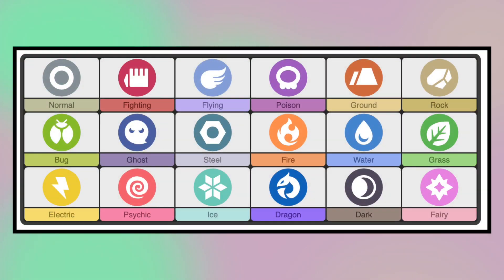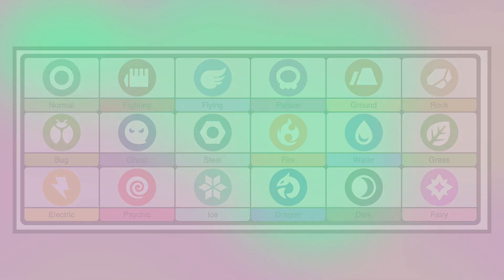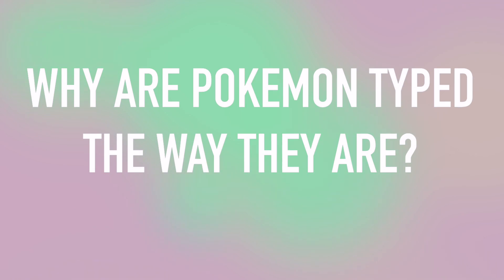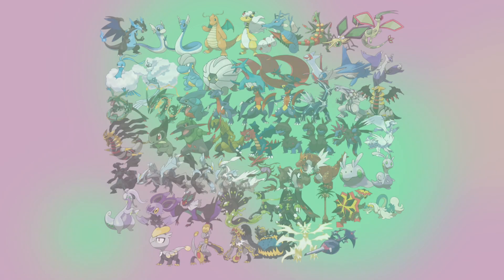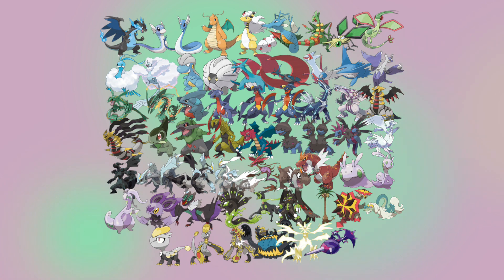Today I want to talk about Pokemon typing and one flaw that I see with the current system that I think has a lot of people confused. I'm going to be talking about the type classification of Pokemon species from an in-universe standpoint, and why certain Pokemon feel mistyped for one reason or another. Namely, we're going to be focusing on the Dragon type.